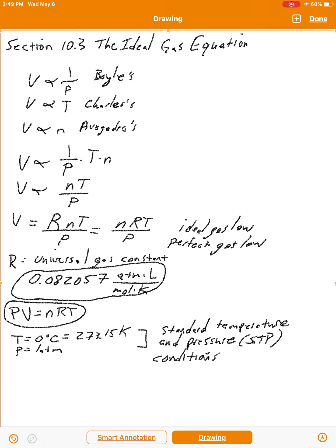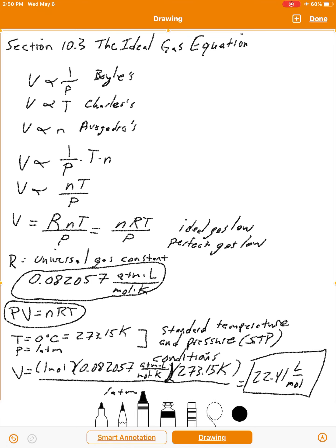Now, the significance of STP is that if you plug in the value of 1 mole of a gas, and you put in the 0.082057 atmosphere liters per mole Kelvin, that's R, and then multiply that by 273.15 Kelvin and divide that by 1 atmosphere, what you get is 22.41 liters per mole. Actually, you get 22.4 liters.